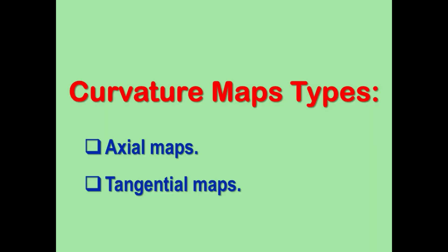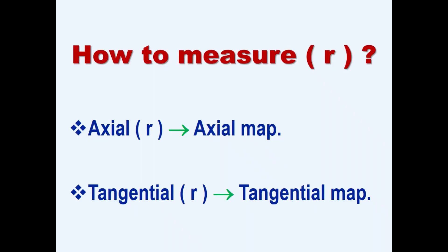Curvature maps are usually displayed in one of two formats: axial or tangential. This depends upon what method is used to measure the radius of curvature.